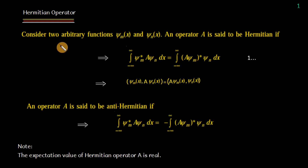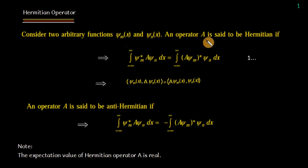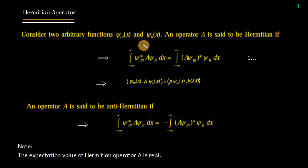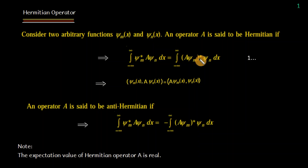Hermitian operator kya hota hai? Consider two functions psi_m and psi_n. An operator A is said to be Hermitian if it satisfies this integral condition. We take the conjugate of psi_m, operate A on psi_n, and integrate with respect to x or volume dr.